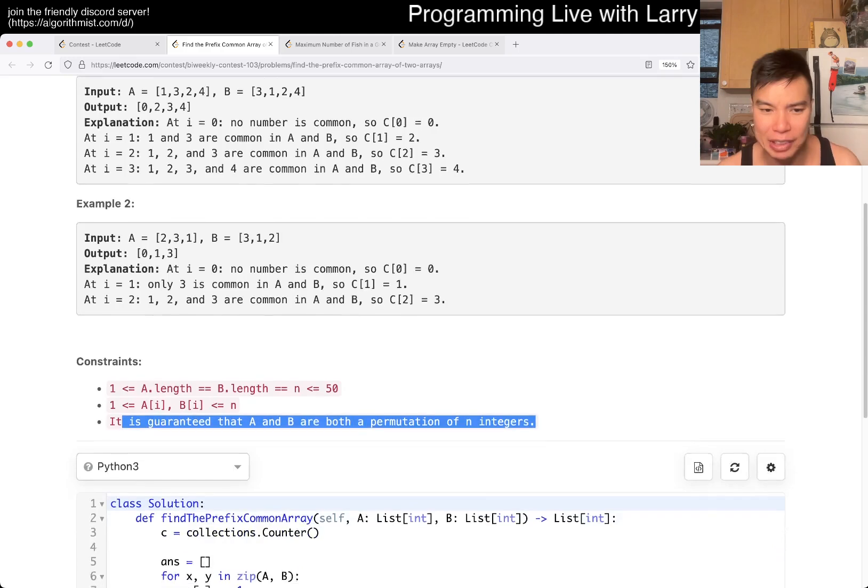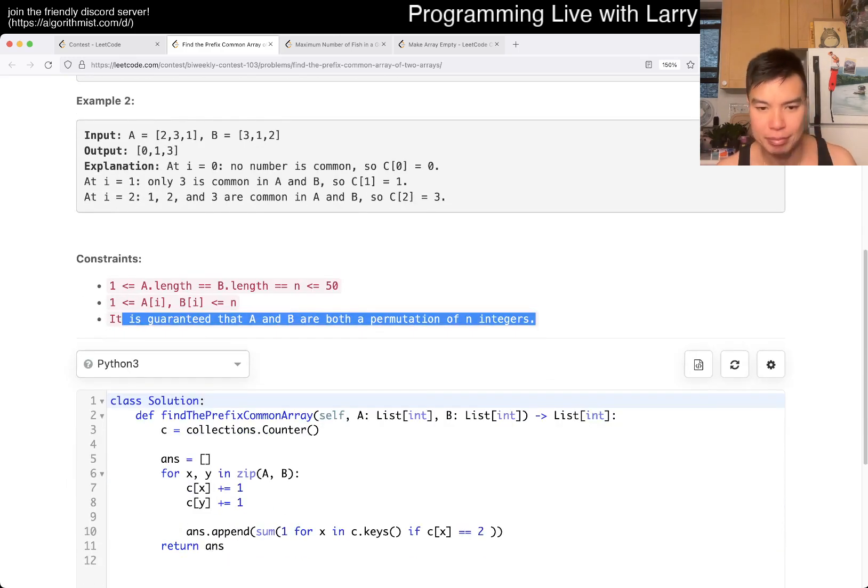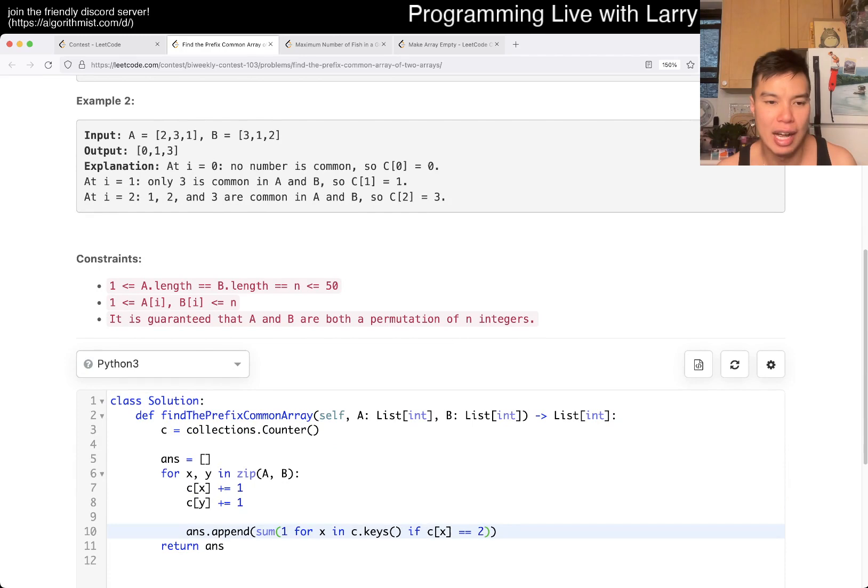You can make some optimizations here, but this is the way that I did it. I did it with n squared. Basically for each one, I increment a counter, and then I just go through the loop in order counter, which is another n, so this is n squared. Given the n is equal to 50, this is fine, and also because of permutation, this allows us to just check whether the number will appear twice.